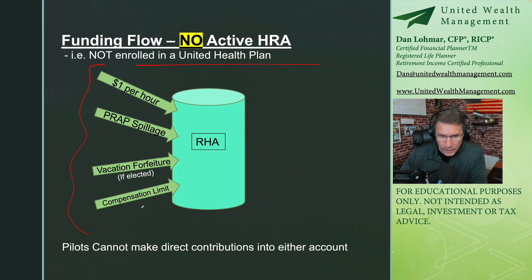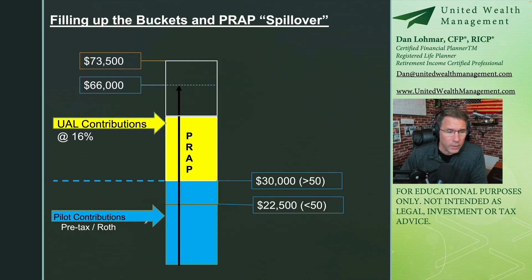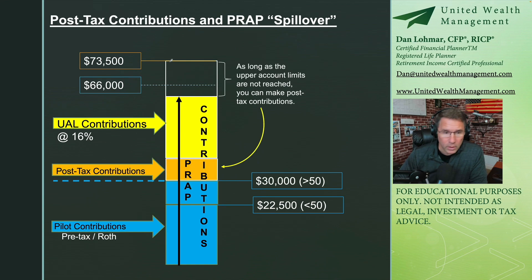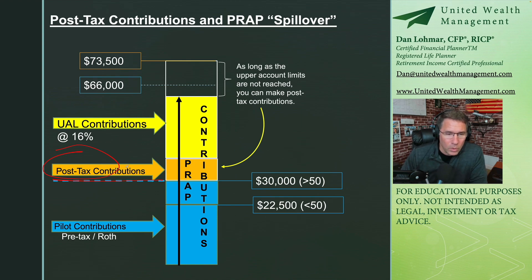Reviewing the contributions: as we make contributions throughout the year, pilot contributions go in either pre-tax or Roth and work up against these limits — $30,000 or $22,500 depending on your age. United contributions are also going in, working toward the upper limits as the year goes on. Once the pre-tax or Roth limit is reached, you can then make post-tax contributions. If you're trying to maximize RHA spillover, you want to make contributions fairly aggressively in the first part of the year — around 20–25 percent.